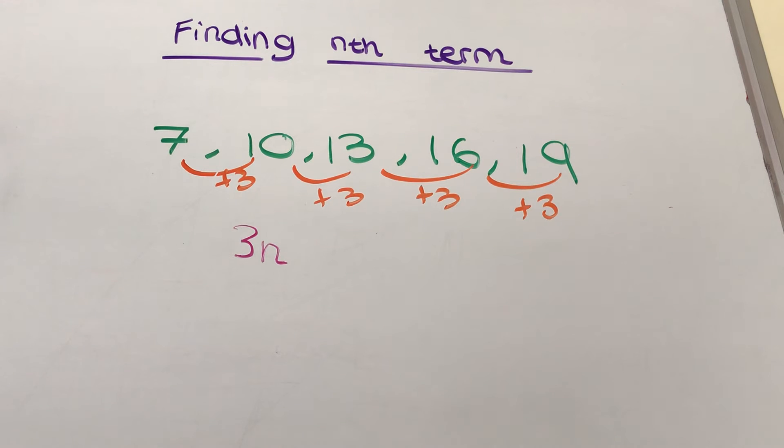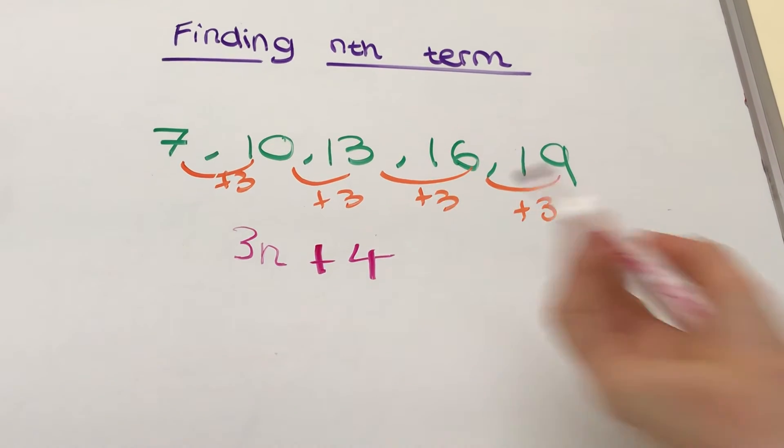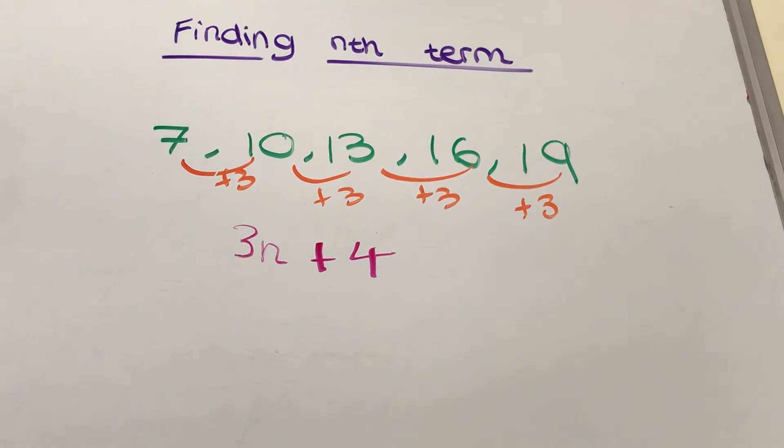So what we're going to do is work out how do you get from 3 to 7. Well, you add 4. 3 plus 4 equals 7. That's it. That is your nth term. Two steps.